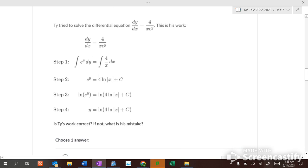Ty tried to do this one. Did Ty make a mistake? So we multiply by e^y first and multiply by dx, and then the integral of e^y is e^y. The integral of 4 over x is 4 ln of x plus c. So then we have to take the natural log of each side to get y alone, because if we take the natural log of e to the y, it's just y. So to get rid of the e, we natural log of both sides.